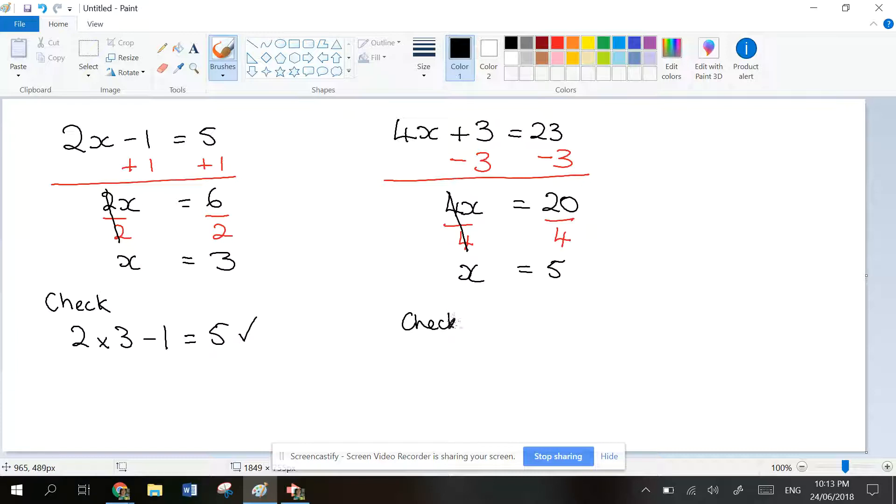You can do a quick check. Let's look at the original equation. It says 4 times x, which is 5, which we just worked out, plus 3. That's 20 plus 3, which gives you 23. Yes, that's correct.